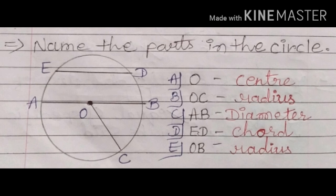The first question is: Name the parts in the circle. I have made a circle with radius, diameter, center, and chord. I have drawn lines to the letters. The first is the letter O — you can see the center point named O, which means it is the center of the circle.